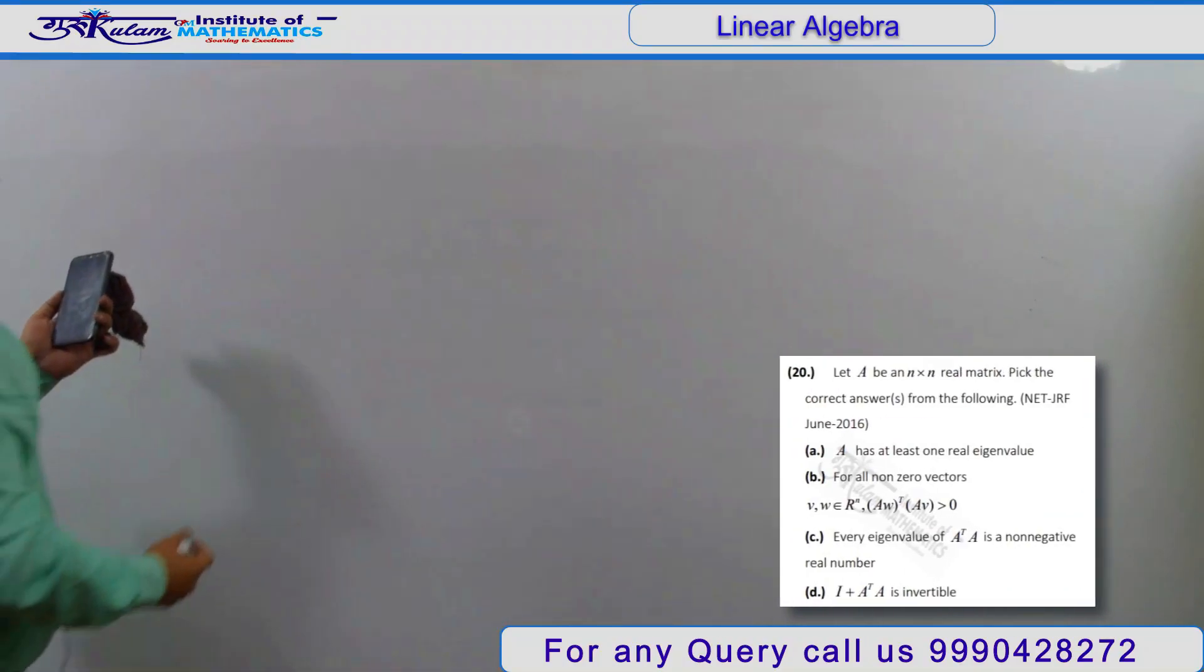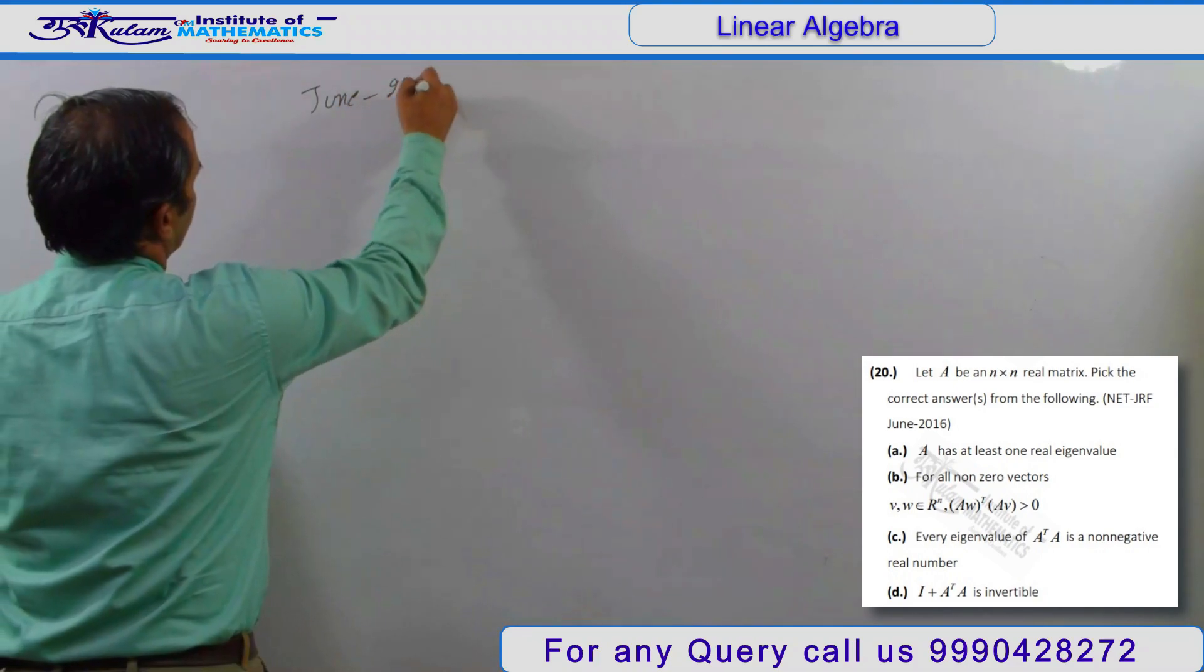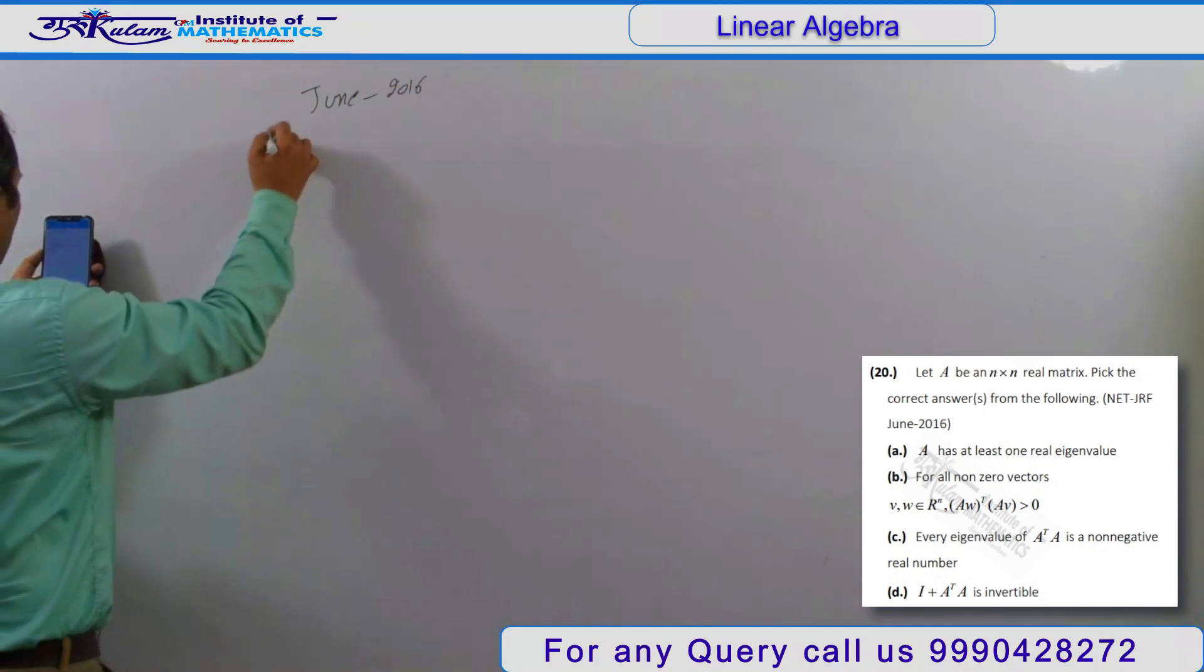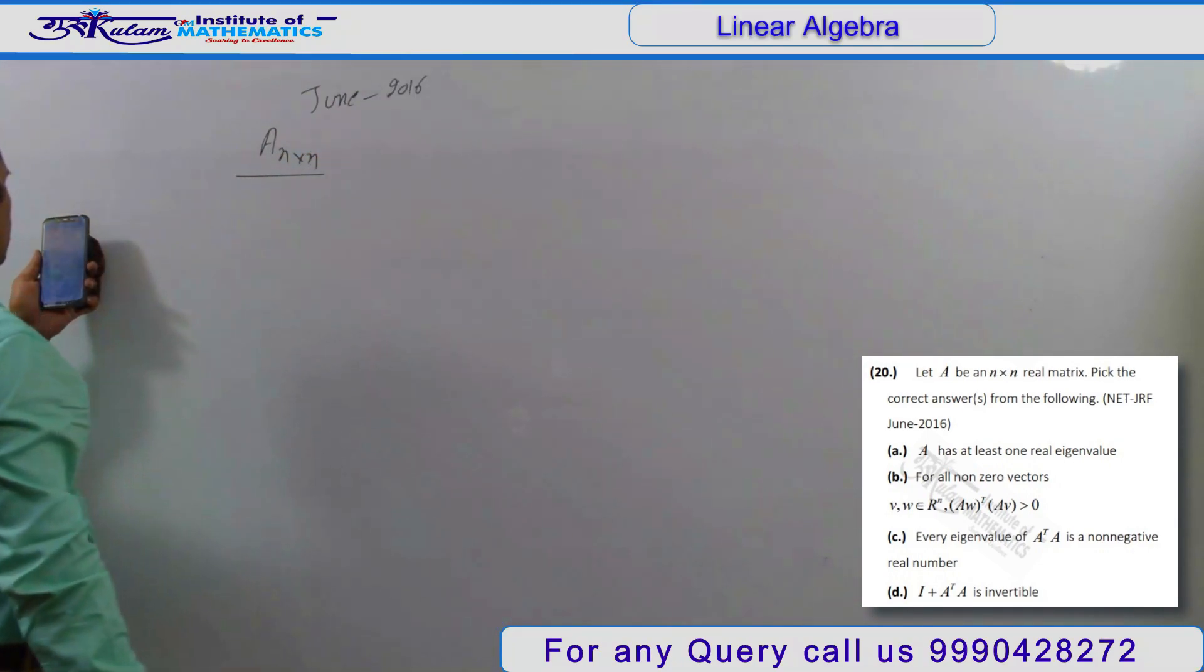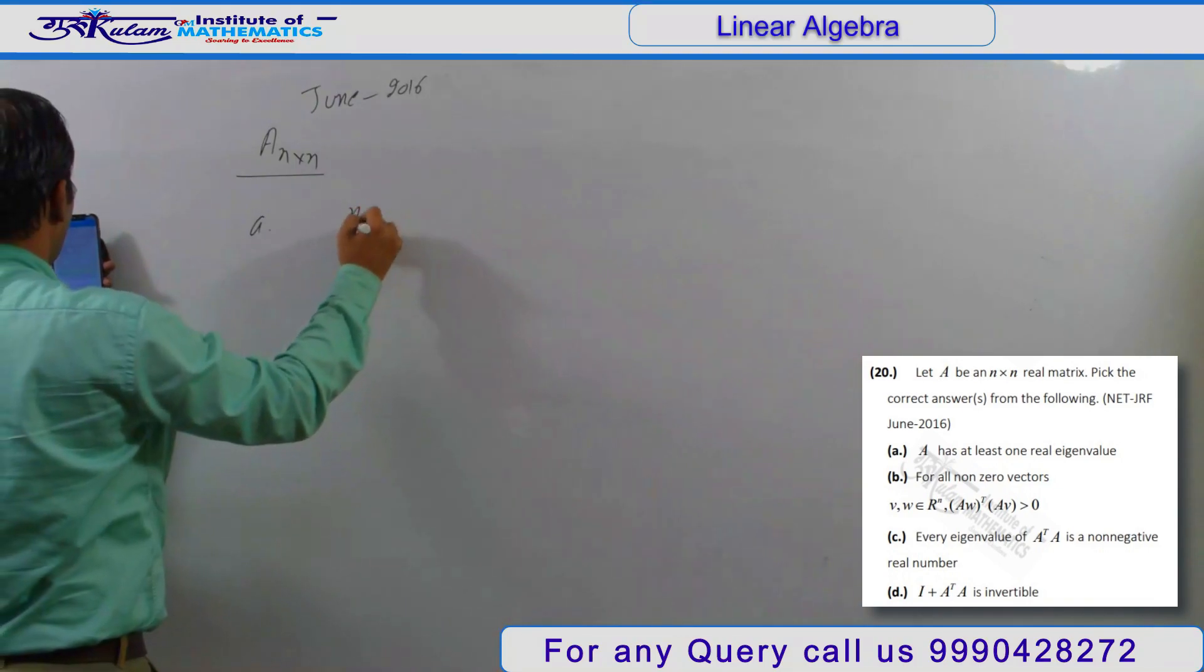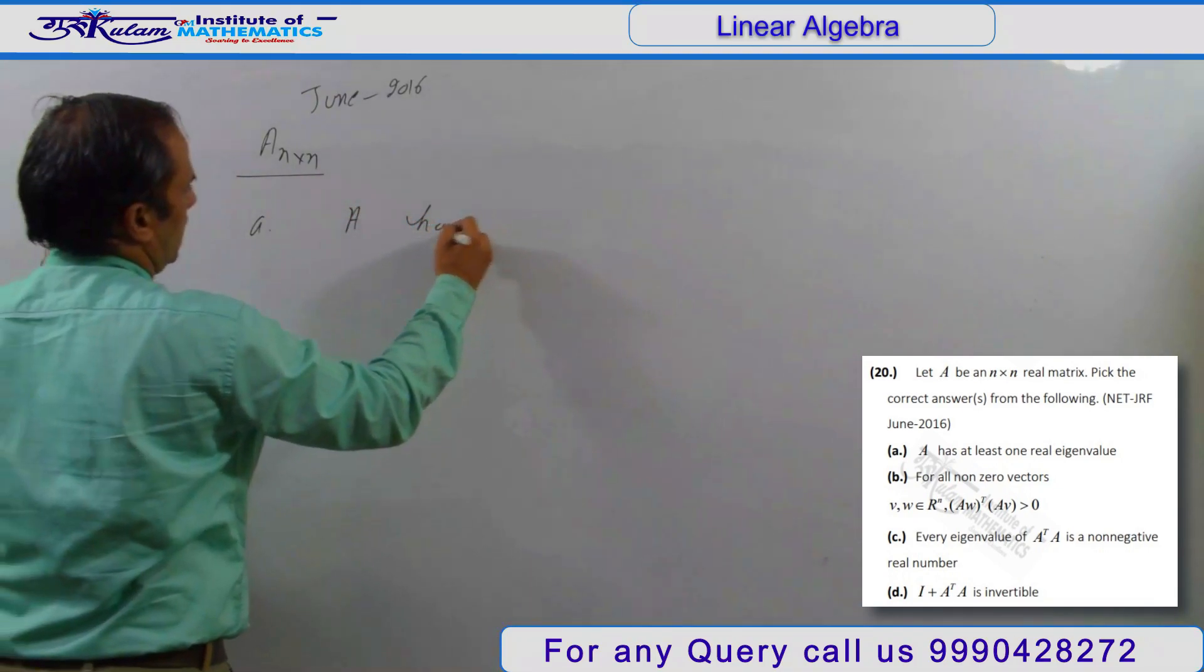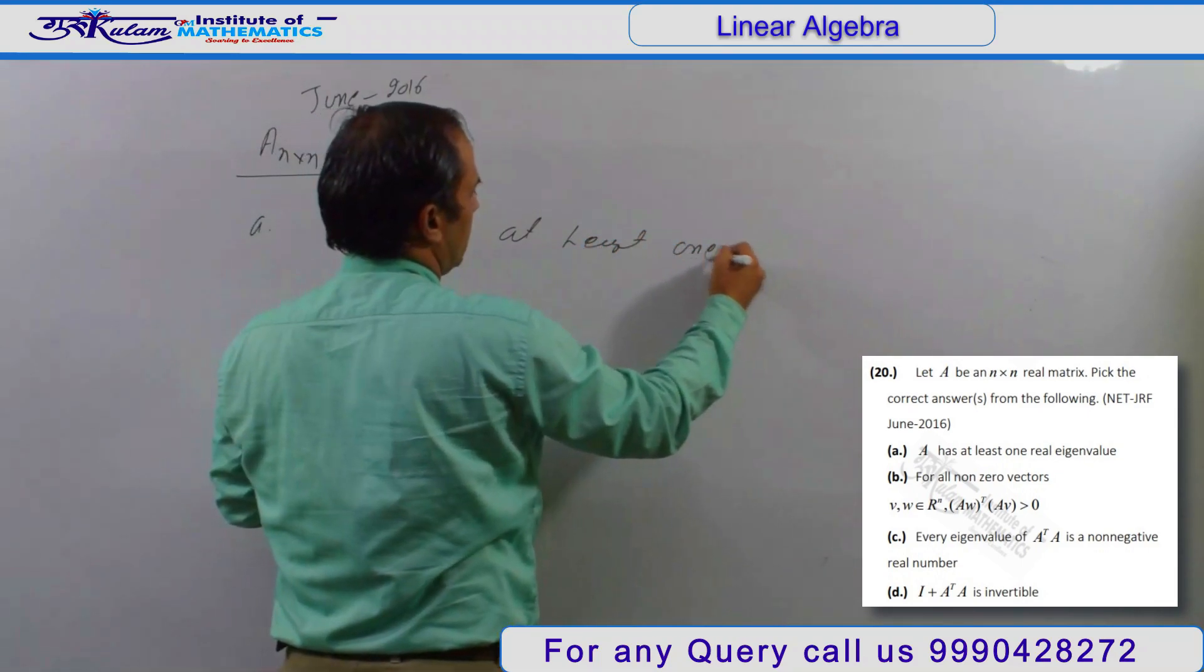So next question is from June 2016. Choose the correct statement. First option is that A has at least one real eigenvalue.